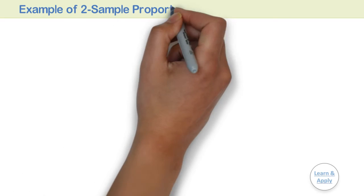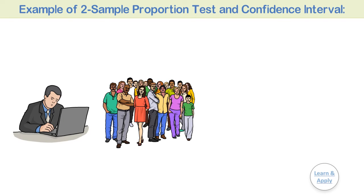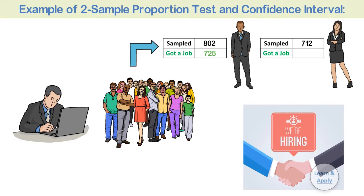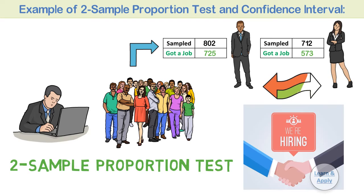Example of two sample proportion test and confidence interval. A university financial officer samples undergraduate students to determine whether male or female students are more likely to get a summer job. He sampled a total of 802 male students, out of which 725 got a job in the summer. Similarly, he sampled 712 female students, out of which 573 got a job in the summer. The officer then performs a two sample proportion test following the general procedure.